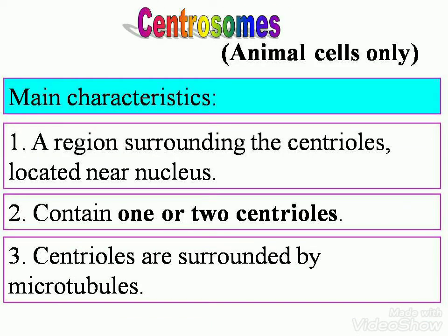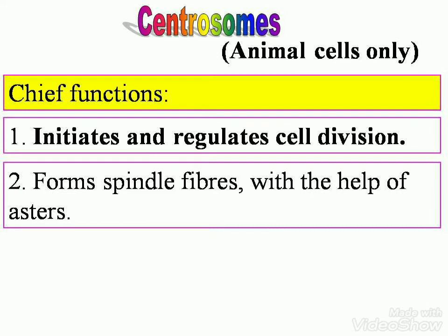Centrosomes. These are present in animal cells only. Main characteristics: a region surrounding the centrioles, located near the nucleus, containing one or two centrioles. Centrioles are surrounded by microtubules. Chief functions: initiate and regulate cell division, and form spindle fibers with the help of asters. You will learn more about these terms in the coming sessions.